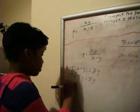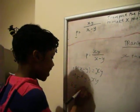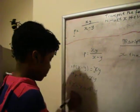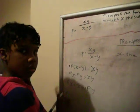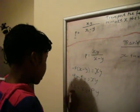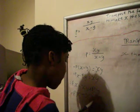So that becomes px equals xy plus py. And then move over there, so px minus xy equals py.